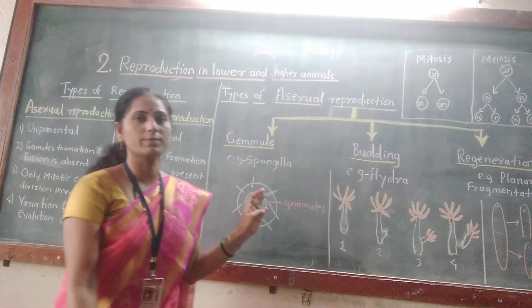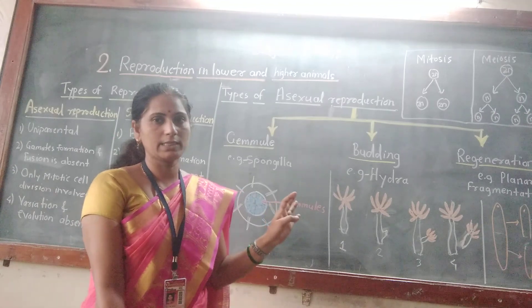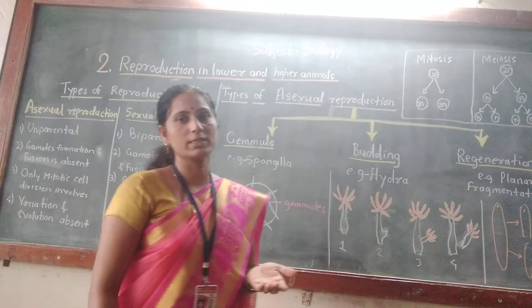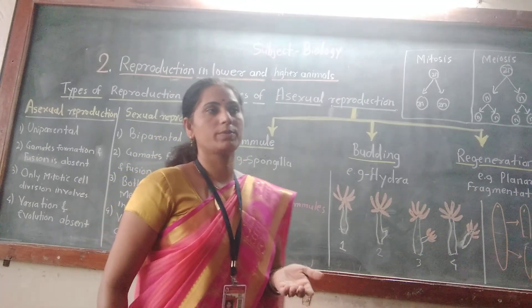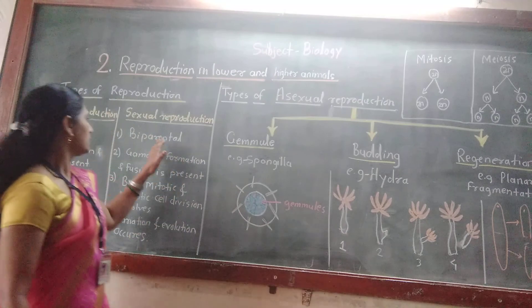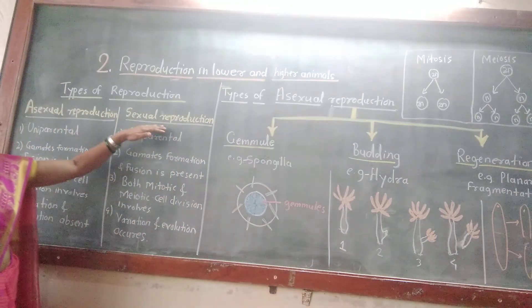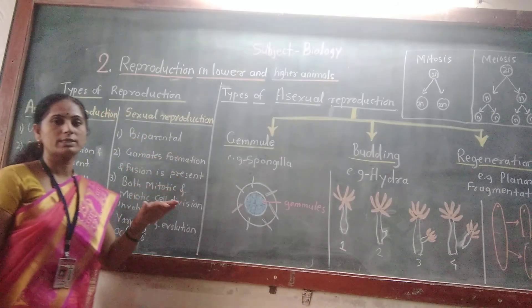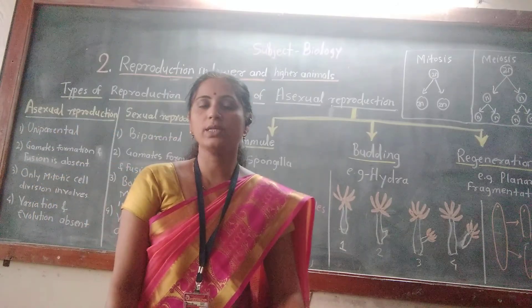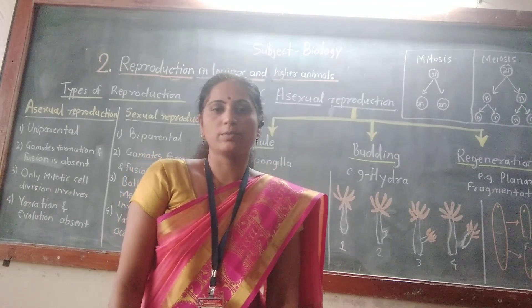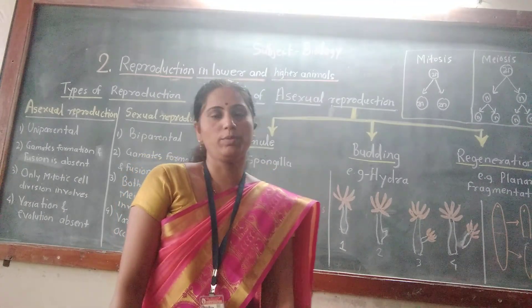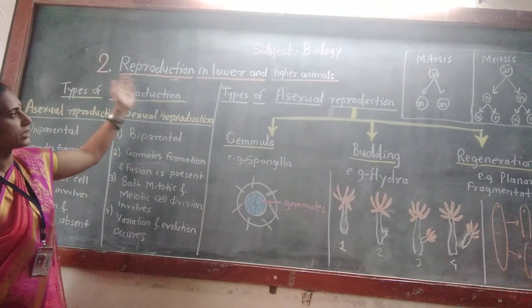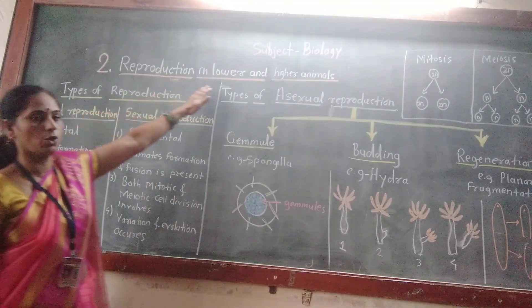In sexual reproduction animals, the breeding pattern is of two types. The first is continuous breeders and the second is seasonal breeders. Seasonal breeders only breed during a specific season — one example is the dog, which breeds only during the rainy season. Continuous breeders, such as humans or apes, breed throughout the year. This is the introductory part of reproduction in lower and higher animals.